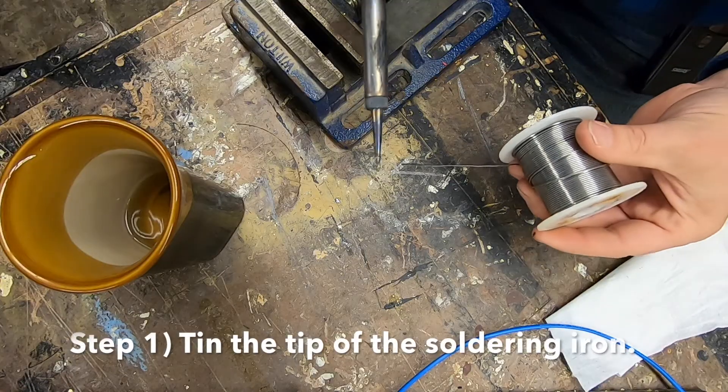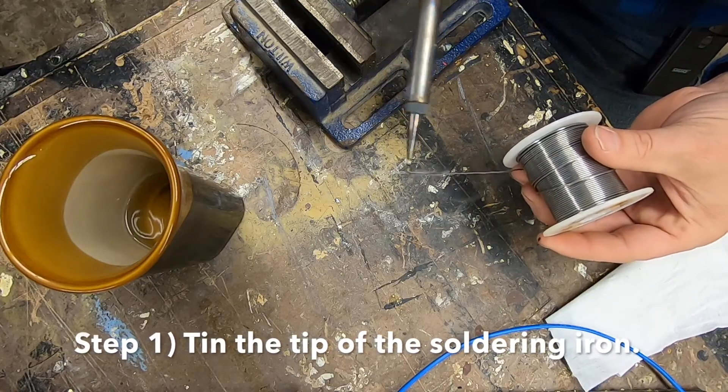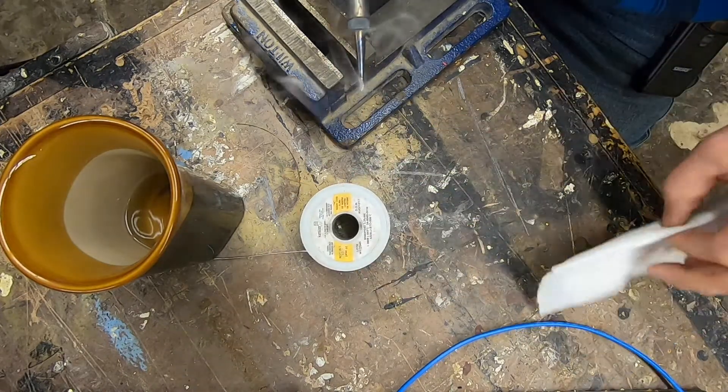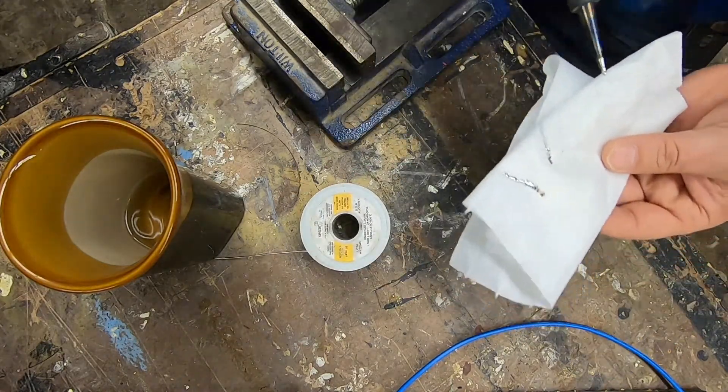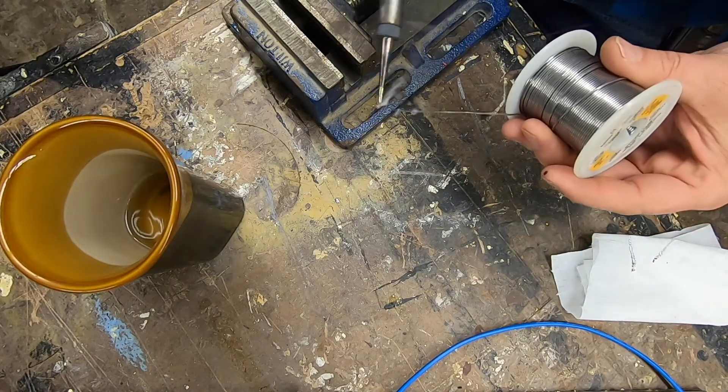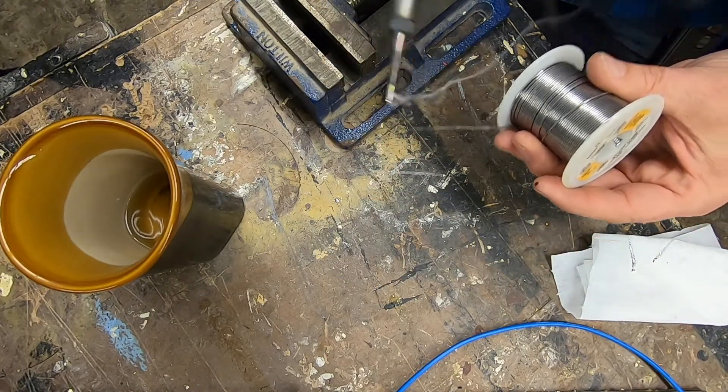When starting to solder, the very first thing I do when I turn my soldering iron on is I will tin the tip. Tinning, T-I-N, is just getting solder on the tip. The solder is what we're going to use to help transfer the heat from the iron to the conductor. This tip is now ready to solder.